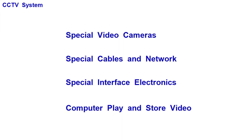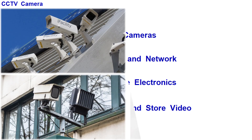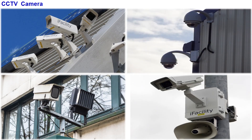A closed-circuit TV uses special video cameras. They are connected with special cables to a dedicated computer which has special interface electronics to capture the video data. The computer plays out the video and stores the data into disk files.